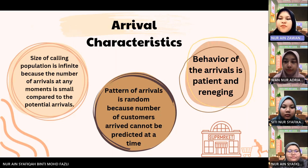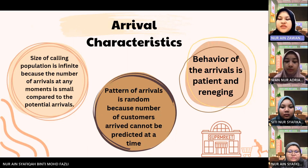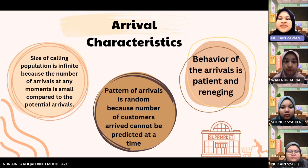The pattern of arrivals follows a Poisson distribution, which means random arrivals of customers, because the number of customers arriving cannot be predicted at any given time. Furthermore, the behavior of arriving customers — the majority are patient customers who wait in the queue line until they are served. Some customers are reneging customers, because they enter the queue and then become impatient and leave without completing their transaction.